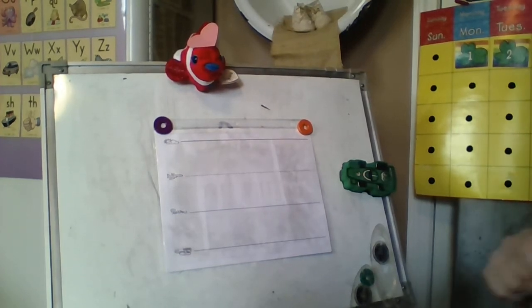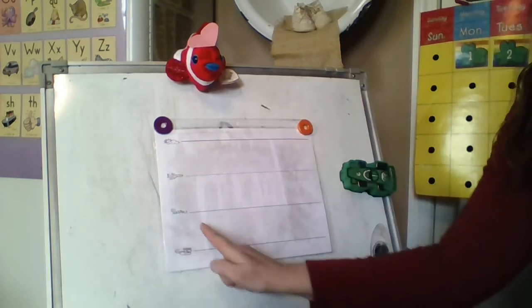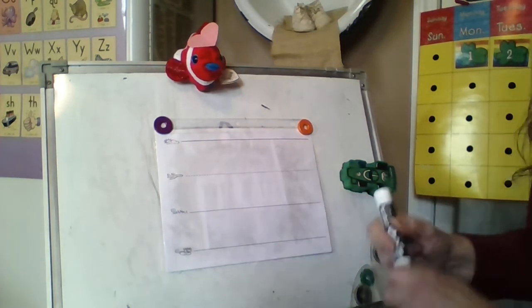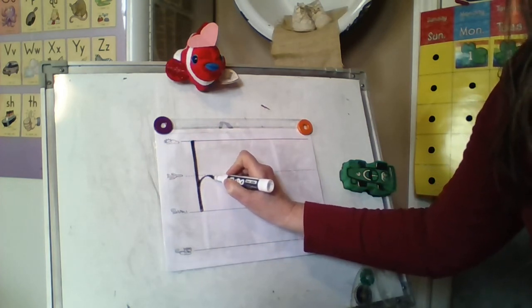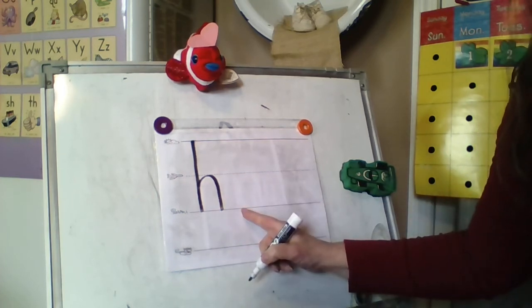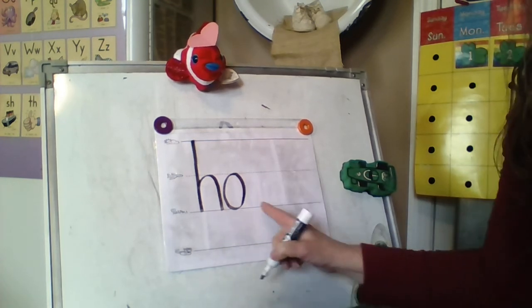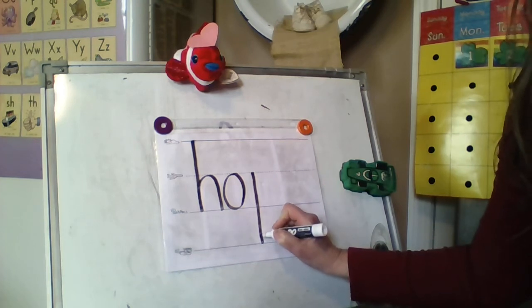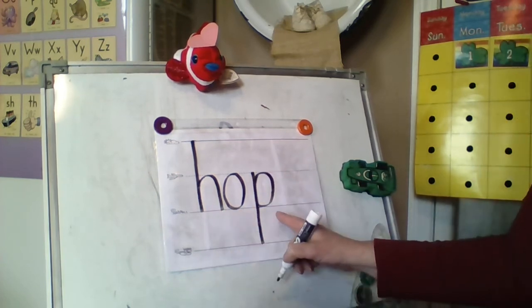We are going to do the word HOP. First we say it: hop. Then we tap it: H-O-P. Hop. Then we write it: H-O-P. H is a skyline letter — we pull down to the grass line, trace back up just to the plain line and around. That's the short O sound — it starts on the plain line, curves to the grass line and right back up. P is a plain line letter — it starts on the plain line and pulls all the way to the worm line, then you trace all the way back up and go around, and it sits on that grass line. H-O-P. Hop. Nicely done — I knew you could do it.